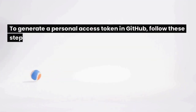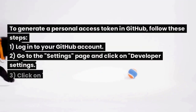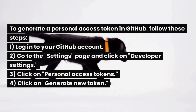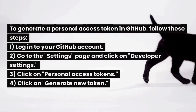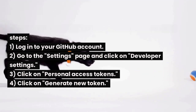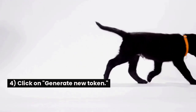To generate a personal access token in GitHub, follow these steps: 1. Log into your GitHub account. 2. Go to the settings page and click on Developer Settings. 3. Click on Personal Access Tokens. 4. Click on Generate New Token.